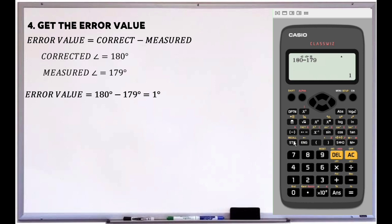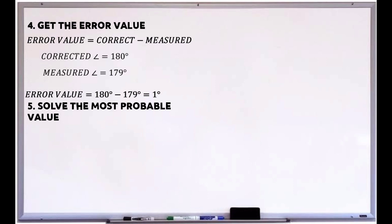Let's store the error value in variable X. The next step is to solve the most probable value for each angle. The formula for most probable value is most probable value equals...